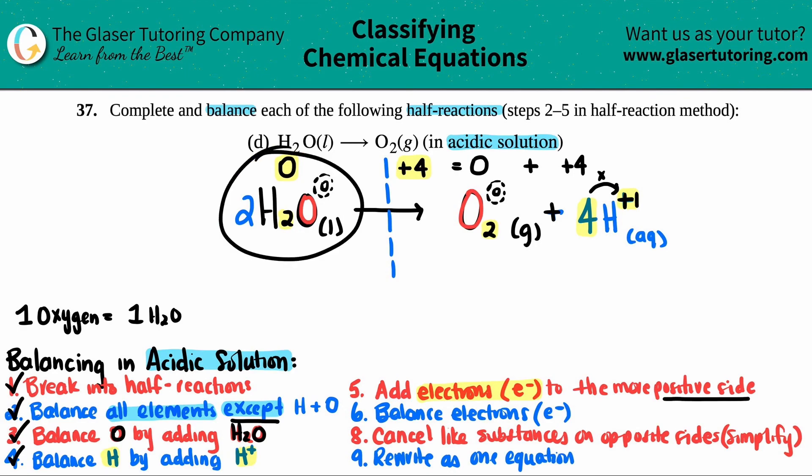So I have an overall zero charge on my left side. I have an overall plus four on my right side. I'm always going to add those electrons to the more positive side. And I have zero and a plus four. The plus four is more positive. So I'm going to say plus E minus. But now the question is how many electrons do I add? Do I add one? Do I add two? Do I add three?